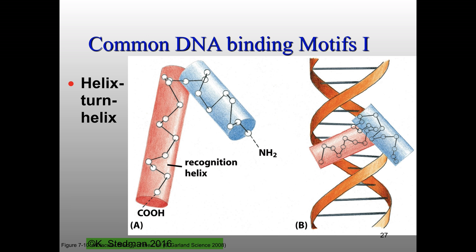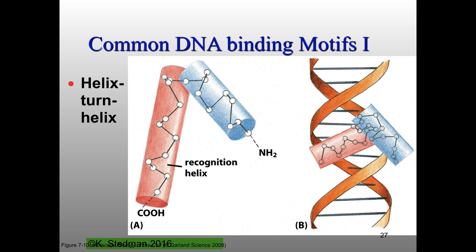We then talked about sequence-specific interactions between DNA binding proteins. We started with a common motif found in bacterial DNA binding proteins — the helix-turn-helix motif. In the helix-turn-helix, there are two alpha helices. The first one, referred to as the recognition helix, binds into the major groove of the DNA. A flexible turn segment allows the second alpha helix to be oriented at a different angle than the recognition helix. That second helix also binds to the DNA, stabilizing the binding through other weak interactions with the double helix.